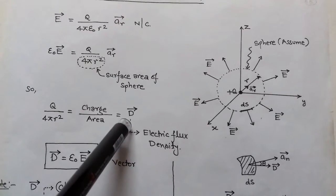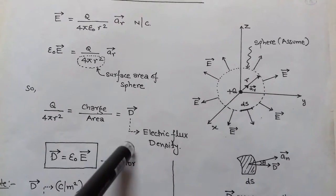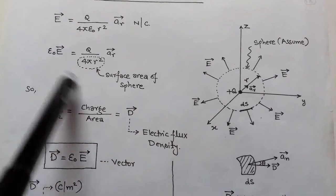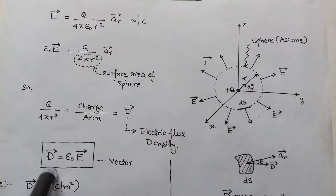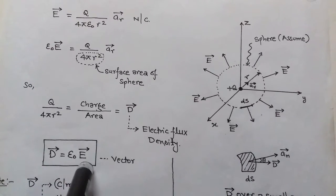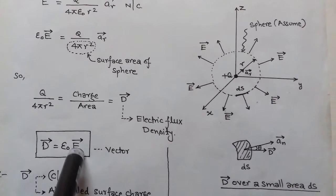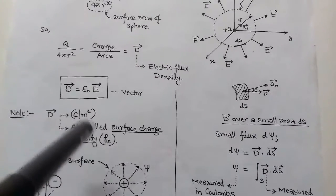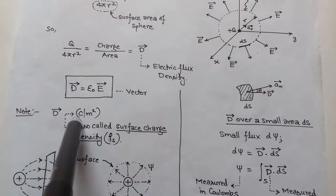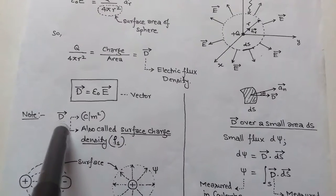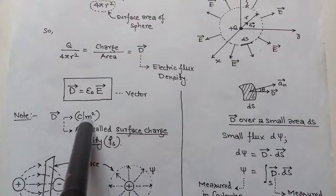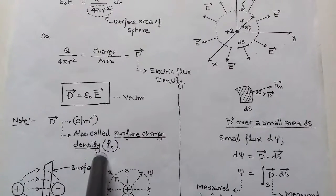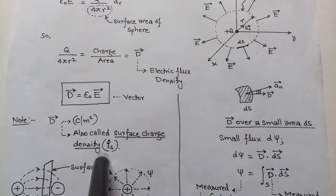Electric flux density is represented by capital D. It is a vector quantity and its value is ε₀E. The unit of D is coulombs per meter square, since charge is in coulombs and area is in meter square. This is also the unit of surface charge density ρs.